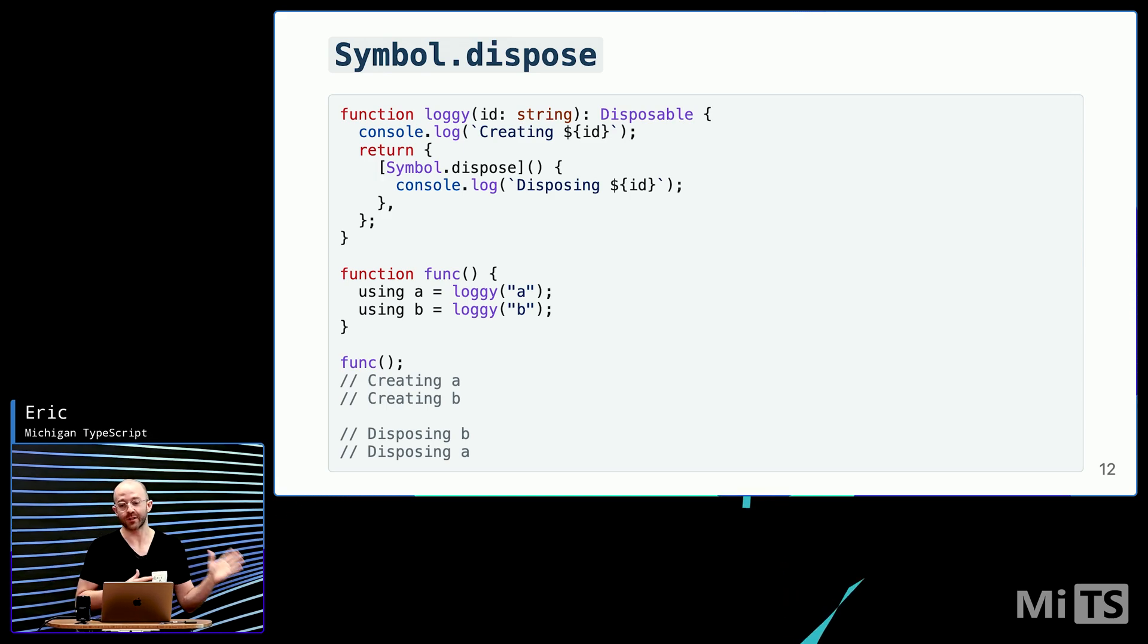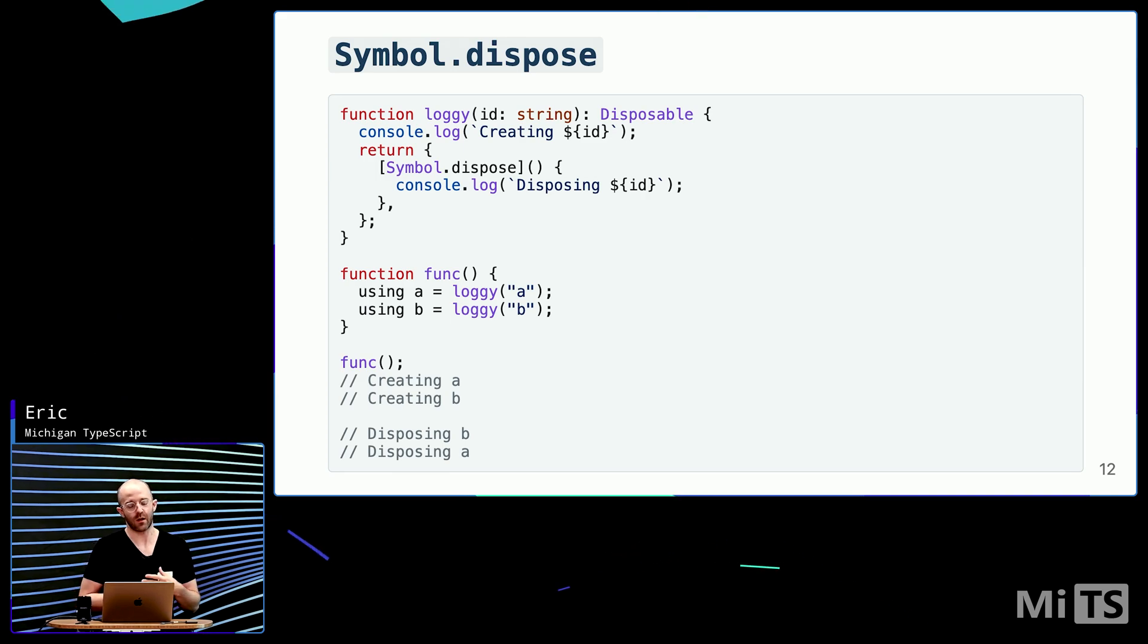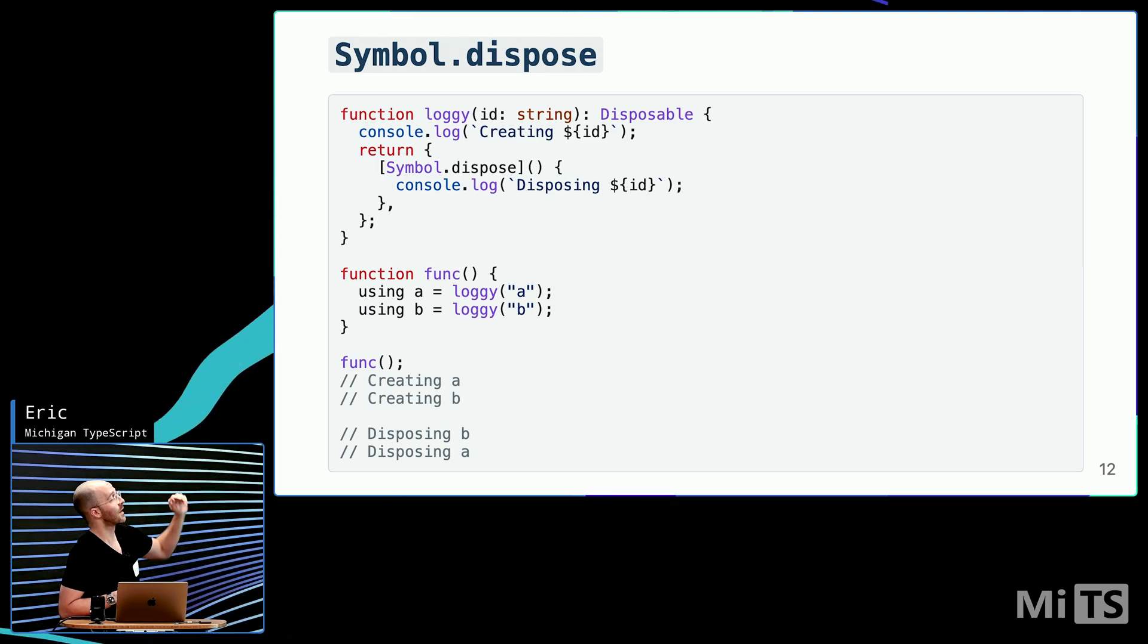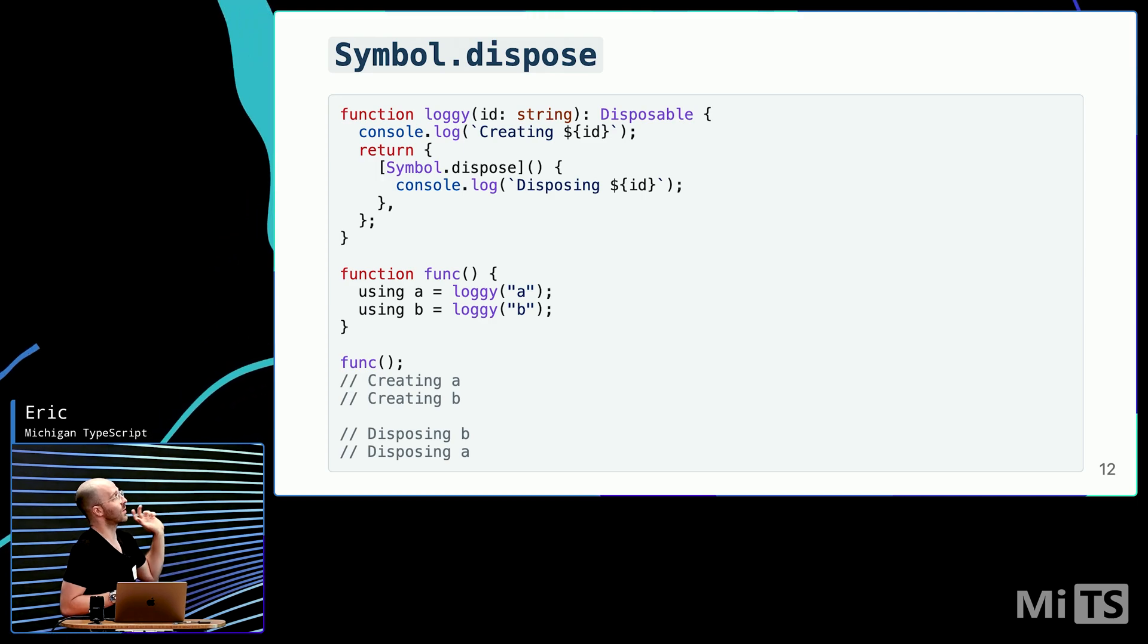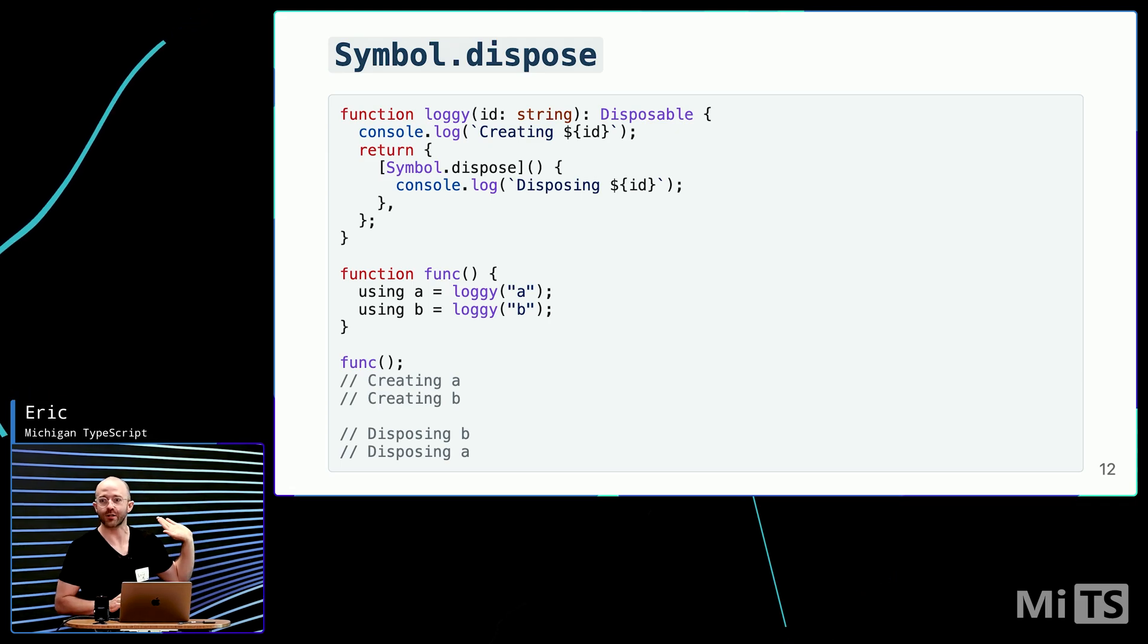Part of this feature is making it possible for end developers to provide a method on their JavaScript objects that can automatically be called when we want to remove resources. And the way that they do that is through symbols. So, there's a new symbol called symbol.dispose. If you attach that on an object, like, for example, in the loggy example, if you attach that symbol, that console.log statement will get called when we are outside, when we're done executing that function.